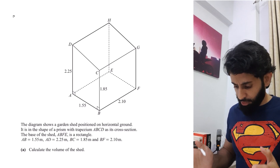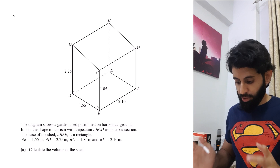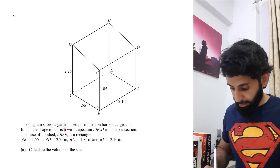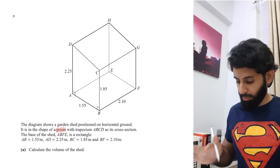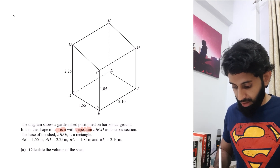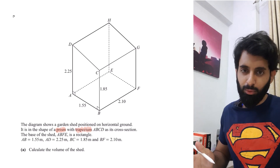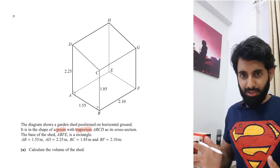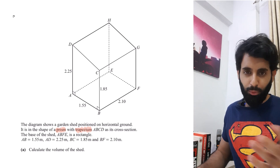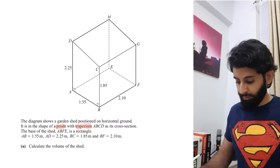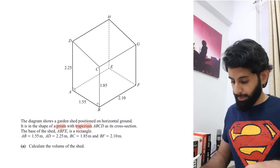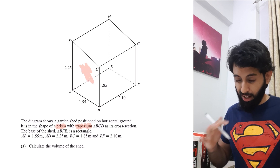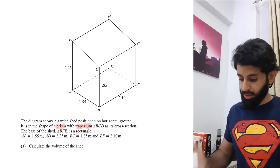The diagram shows a garden shed in the shape of a prism — very important, because that means whatever formula I use will be related to prisms. The cross section is trapezium ABCD. The volume of a prism is area of cross section multiplied by length, where length is the perpendicular distance between the two identical faces. I have a video on prisms you should check out.